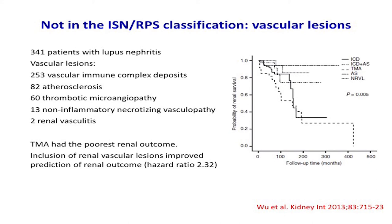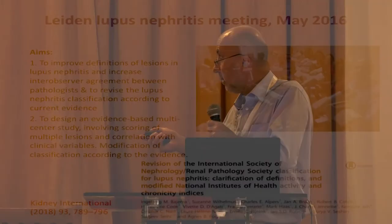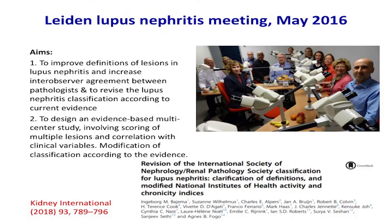In response to all of these deficiencies, over three years ago a group of us got together in Leiden, and we set about revising the lupus classification in two phases. Phase one: to improve the definitions, inter-observer agreement, and revise the classification according to current evidence. Phase two — the really tricky phase — will be to devise an evidence-based multi-centre study to completely reconfigure the classification and give it the IgA nephropathy treatment. We've now completed and published phase one.